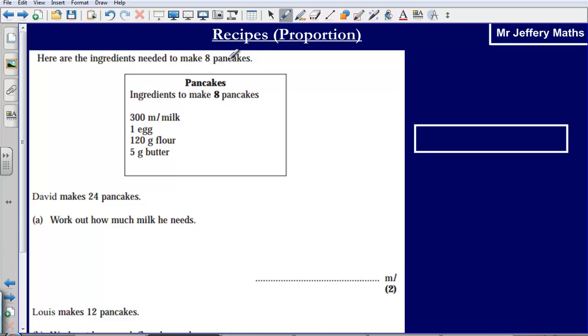Here are the ingredients needed to make 8 pancakes. So we're given some information here. Then David makes 24 pancakes. Look at how much milk he needs. Now the way that I like to think about this and show how we might go about doing this is to draw a bar.